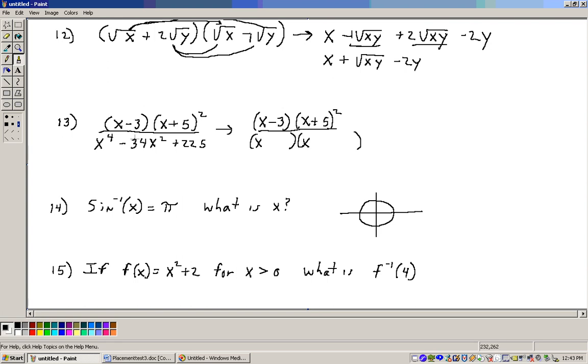This is x to the fourth, so if it factors, it will break into x squared and x squared. This here tells me that the signs are the same, both negative. So I need a minus and a minus. Now factors of 225 that add up to 34, I think are 25 and 9. 25 times 9 is 225, and 25 and 9 is 34.